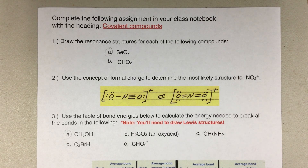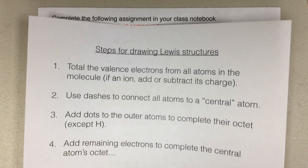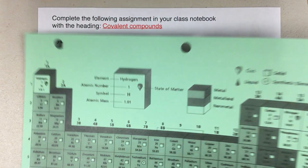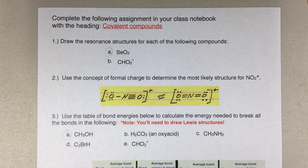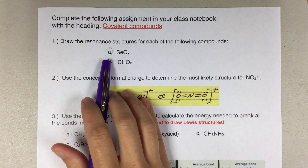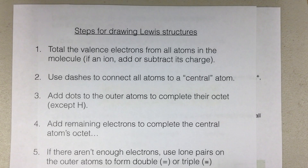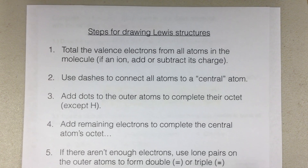The first section is resonance structures. We're using Lewis structures, so I'll be referring to the steps for drawing Lewis structures, which you have in your notes. You'll also need your periodic table for valence electrons. For this first one, I'm going to do 1A, which is SeO₂. So I'm going to follow my steps for writing Lewis structures — the first step is to total the number of valence electrons from all the atoms.